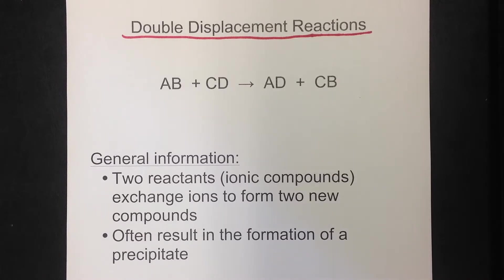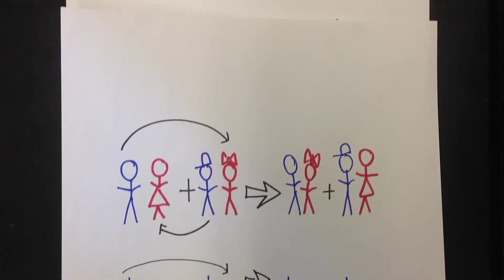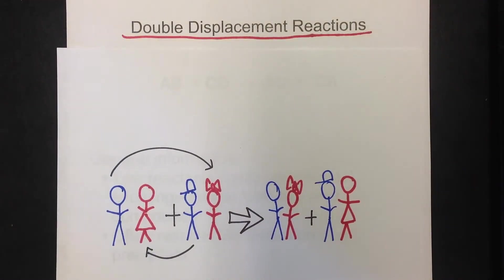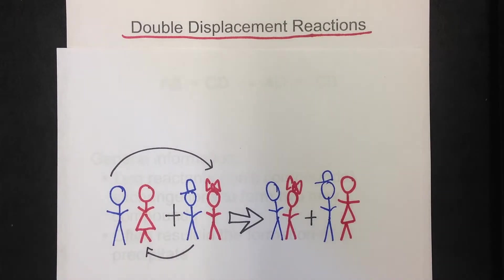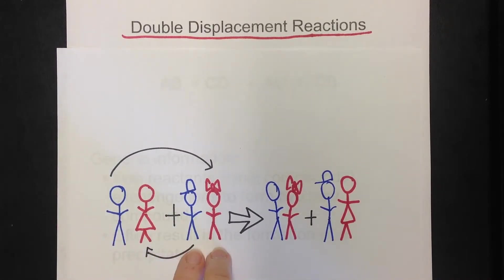The easiest way to describe a double displacement reaction is to think about it as the double date. We've got a couple going out on a date with another couple, and at some point they decide they're going to switch dates. When you're looking at the ionic compound and the ionic compound, think: positive, negative, positive, negative.